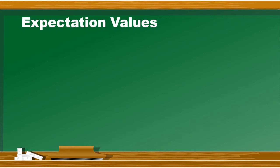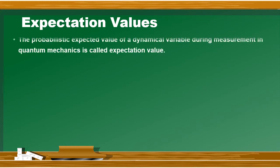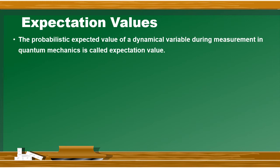Expectation value को यह define किया जा सकता है: The probabilistic expected value of a dynamical variable during measurement in quantum mechanics is called expectation value. यह probabilistic expected value बताता है dynamical variables की। Dynamical variable के अंदर position, momentum, energy हो सकती है। आप एक operator apply करते हैं wave function पे, measurement लेते हैं, और जो expected value आती है उसको expectation value का नाम دیا जाता है۔